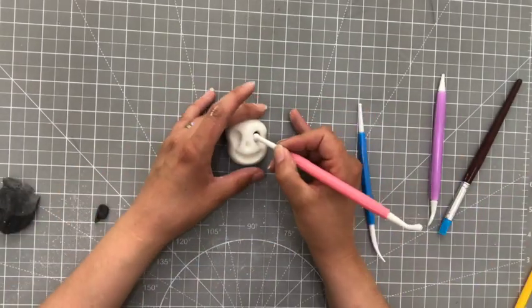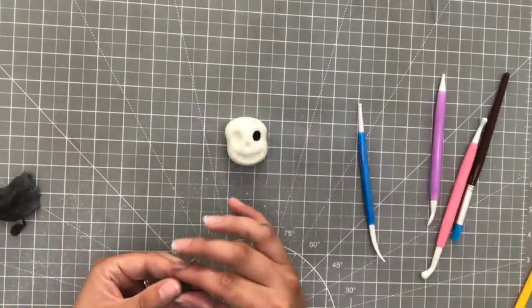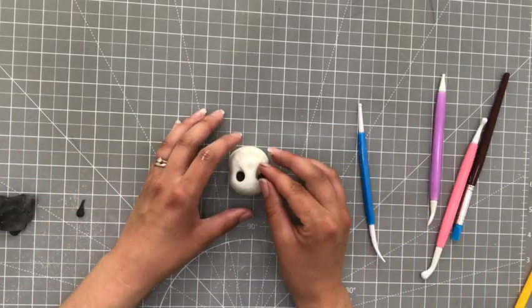I add a tiny bit of black into the eye sockets and the nose as well. And then two tiny balls of white into the eyes.